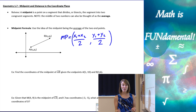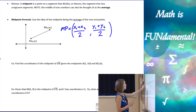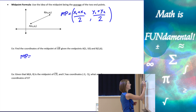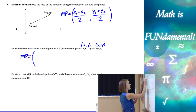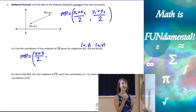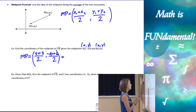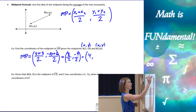If you connect midpoint to the concept of averaging the x's and the y's, it's easier to remember the formula. Example 1: find the coordinates of the midpoint of AB given endpoints A(5, −10) and B(3, 6). Average the x's: (5 + 3)/2, and average the y's: (−10 + 6)/2. That gives 8/2 and −4/2, which is (4, −2).